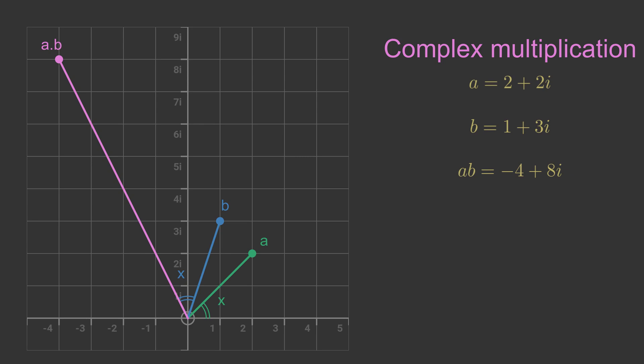If we look at the multiplication calculation, it is not obvious why this should be. We multiply 2 plus 2i by 1 plus 3i. This is 2 plus 2i times 1 plus 2 times 2i times 3i.